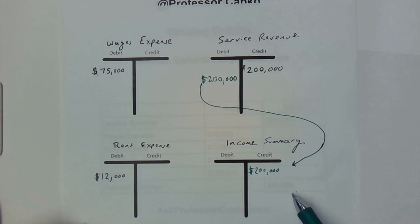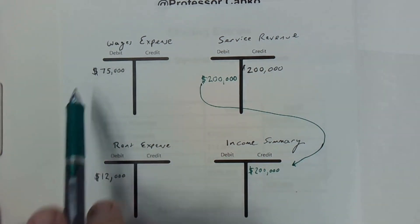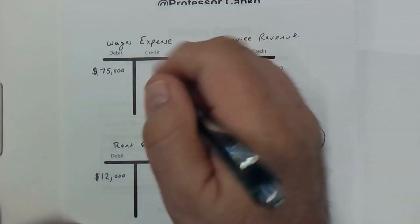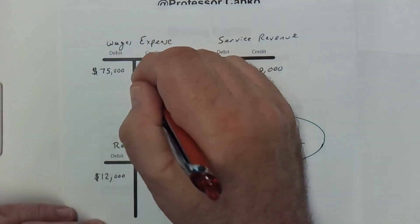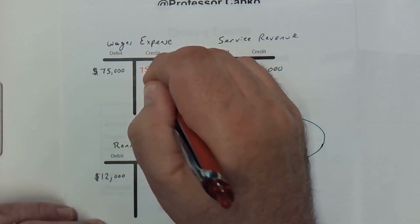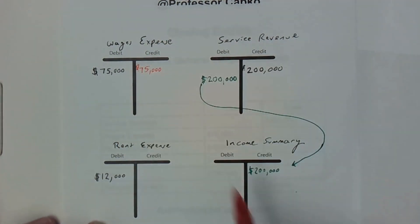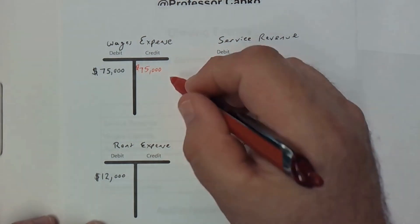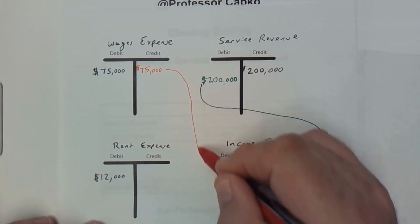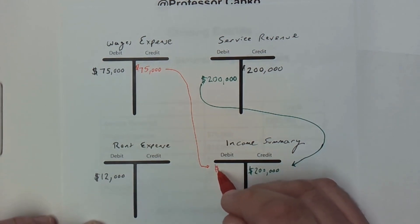Now let's close out our expense accounts. Our wages expense for the year is $75,000 and it's sitting as a debit, so I'm going to credit wages expense for $75,000. Since I have a credit here, I need an offsetting debit of $75,000 — and that, you guessed it, will be debiting the income summary.